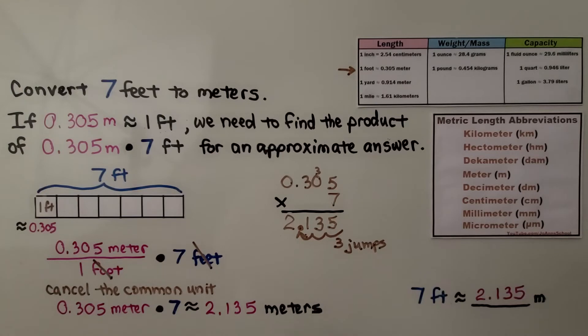We have our bar diagram. We have 7 boxes that each represent 1 foot, and 1 foot is 0.305 meters. We write a unit rate of 0.305 meter over 1 foot times 7 feet. We cancel the common unit, cross off feet, cross off foot, and we get 0.305 meter times 7.